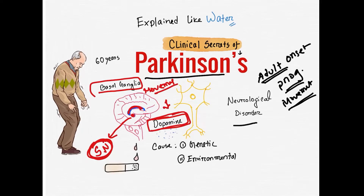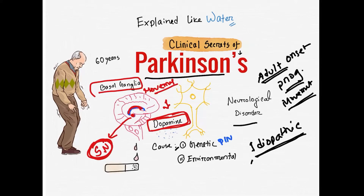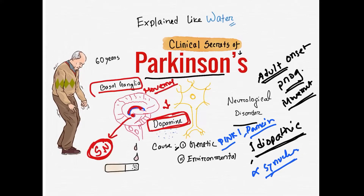These neurons undergo degeneration. The cause is mainly idiopathic. But there are also genetic causes — genetic mutations in some genes like the PINK1 gene, Parkin gene, and alpha-synuclein gene. Mutations in these genes can cause Parkinson's disease. What are the genes? PINK1, Parkin, and alpha-synuclein gene.